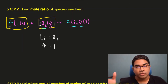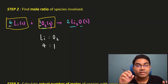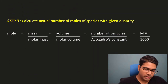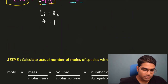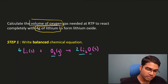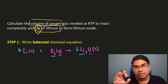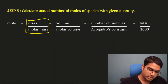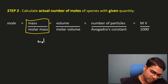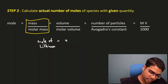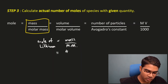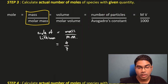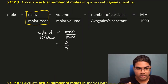Now that we have the mole ratio, we find the actual number of moles. We are given the mass of lithium — 4 grams — so we use moles = mass ÷ molar mass. Moles of lithium = 4 ÷ 7 (molar mass of lithium is 7, which will be given). So the actual moles of lithium = 4/7.